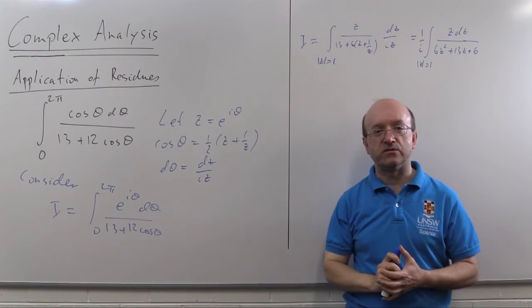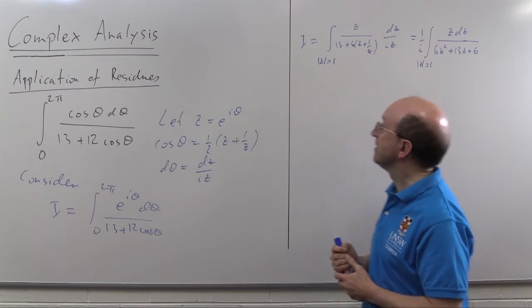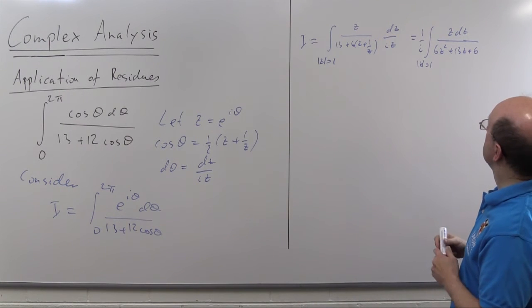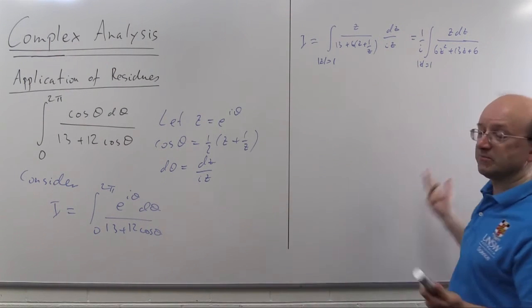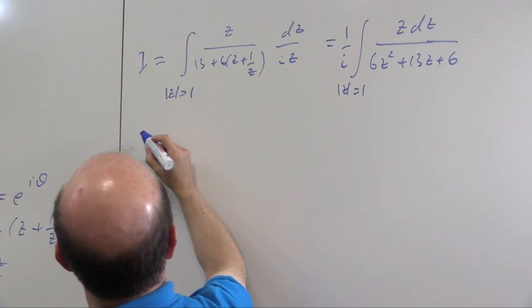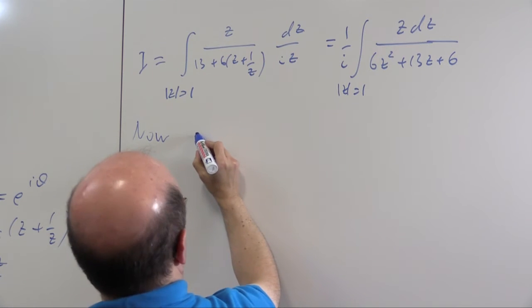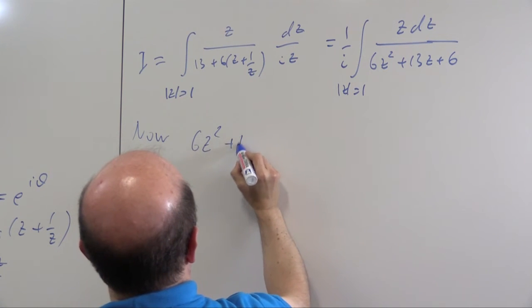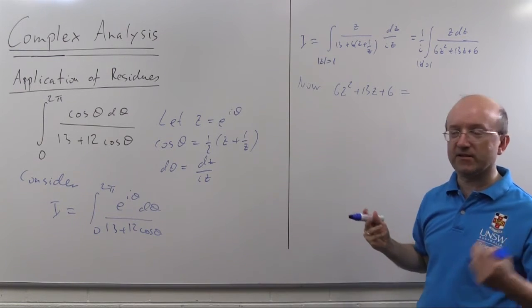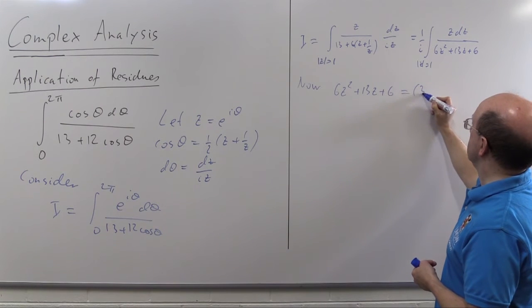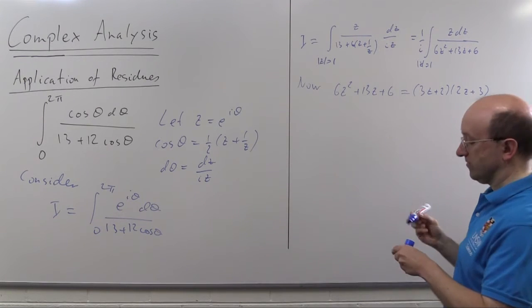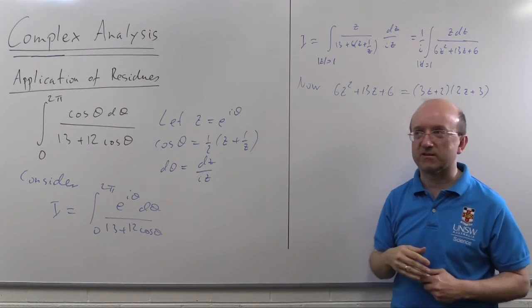So that's the integral I now have to find. I'm going to find it using residues. So the question is, where are the singularities of my integrand? Well, it's just a simple quadratic in this case, so this is high school work to find the singularities, and therefore the zeros, and in fact 6 z squared plus 13 z plus 6. Well, you could use the quadratic formula or any other method you like, but what you'll get out of this, in fact, is 3 z plus 2 times 2 z plus 3. A little bit of high school algebra there.